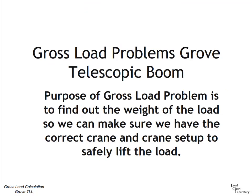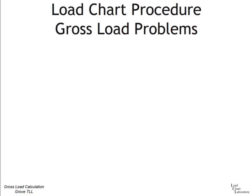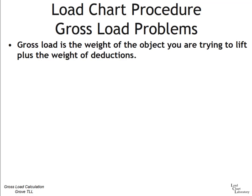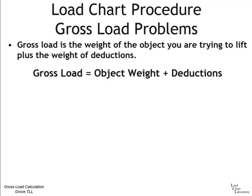Why do we need to calculate the gross load? By calculating the gross load, we find out the total weight of the load, and knowing that we can make sure we have the correct crane and setup to safely lift. The load weight is not just the weight of the object — it includes wire rope, block, and other lifting accessories. Gross load equals the object weight plus deductions: GL = OW + DED.